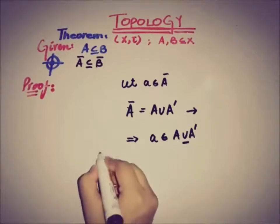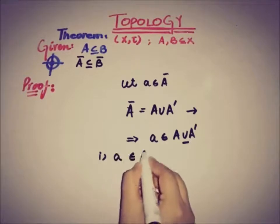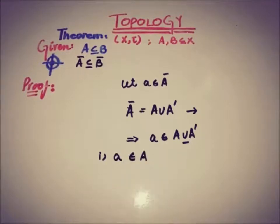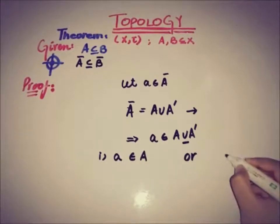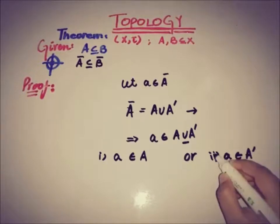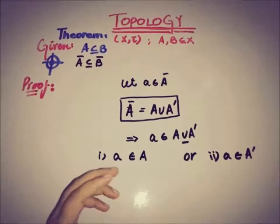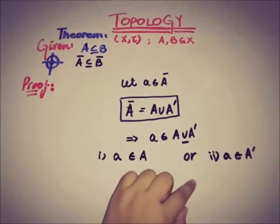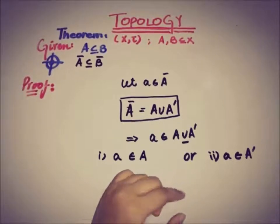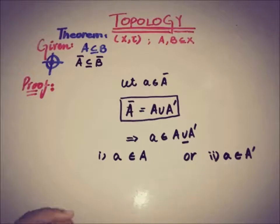The first case is that a is a member of the set A, and the second case is that a is a member of A', the accumulation point set of A.